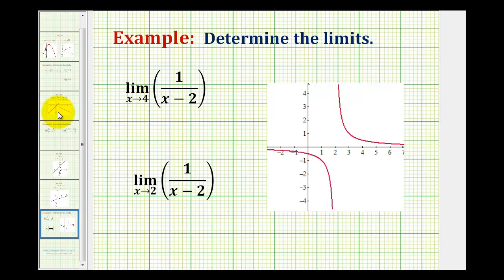I thought we should take a look at one more example of determining limits analytically. Here we have a rational function that does not simplify. So we have the limit as x approaches four of one over x minus two.